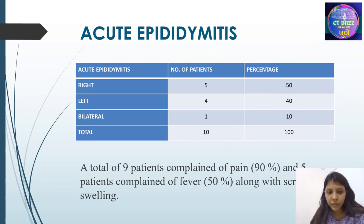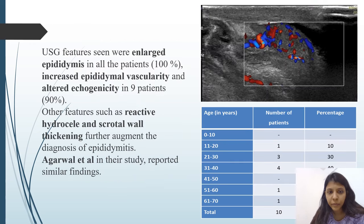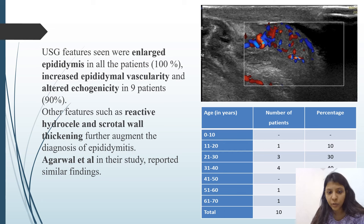Acute epididymitis: a total of 9 patients complained of pain and 5 patients complained of fever along with scrotal swelling. The USG features were enlarged epididymis in all the patients, increased epididymal vascularity and altered echogenicity in 90% of the patients. Other features such as reactive hydrocele and scrotal wall thickening further augment the diagnosis of epididymitis. Agarwal et al. in their study reported similar findings.